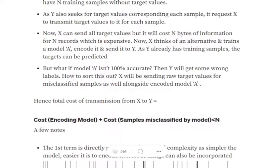So the total cost of transmission from X to Y is estimated using cost of encoding the model plus cost of samples that are misclassified by the model, less than n. The cost of encoding model equals the complexity of the model.